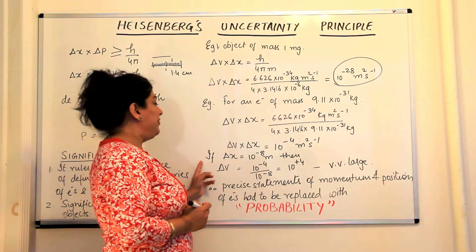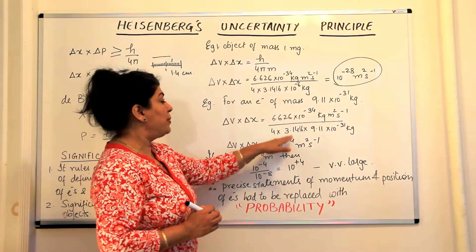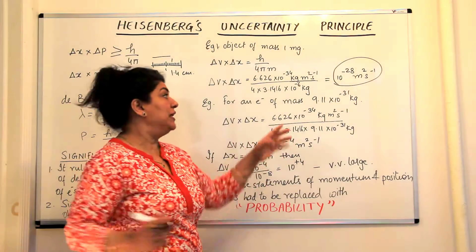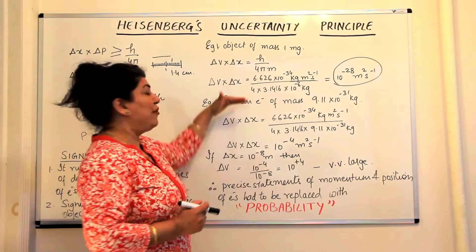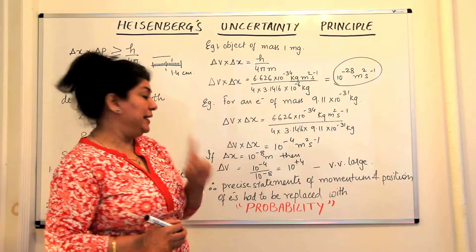Now this value, 10 to the power minus 4, is substantially large in comparison to 10 to the power minus 28 that we calculated for an object of mass 1 milligram.